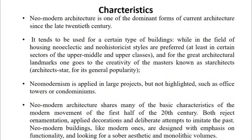Here are a few characteristics of Neo-Modern architecture. It is one of the dominant forms of current architecture since the late 20th century — from the 1980s onwards. It tends to be used for certain types of buildings; in the field of housing, Neo-Eclectic and Neo-Historicist styles are preferred, while for great architectural landmarks, one looks to the creativity of master or 'star architects.'